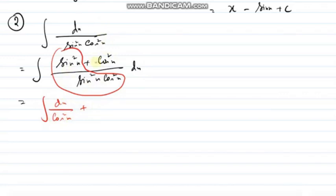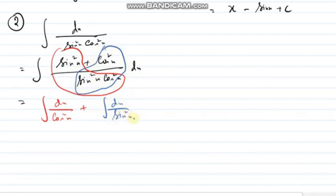Plus, now, if I will take this term, it will be dx divided by sin square x. So now, this will be integration of sec square x dx plus integration of cosec square x dx. What is the integration of sec square x dx? Tan x, right? And cosec square x dx minus cot x plus c.